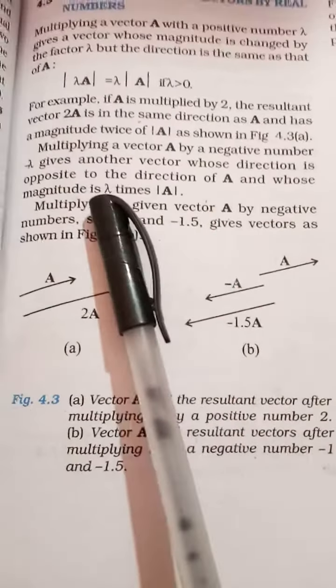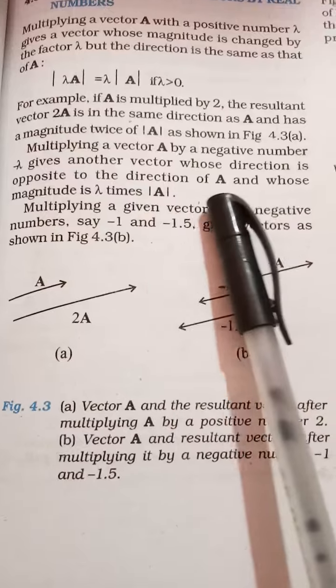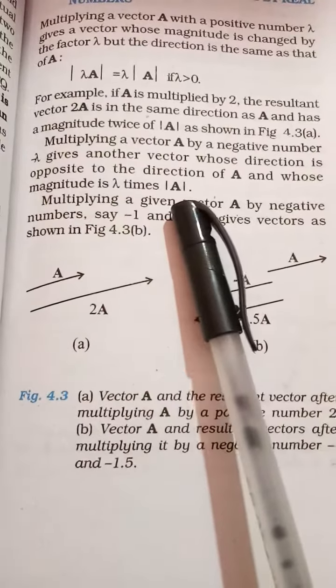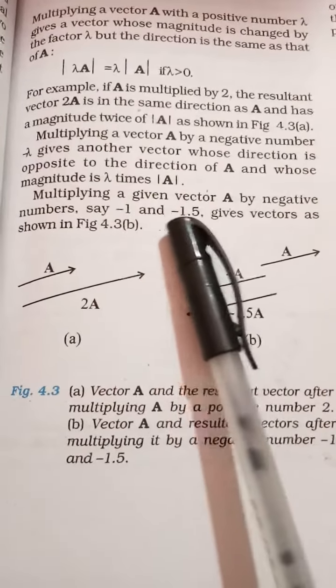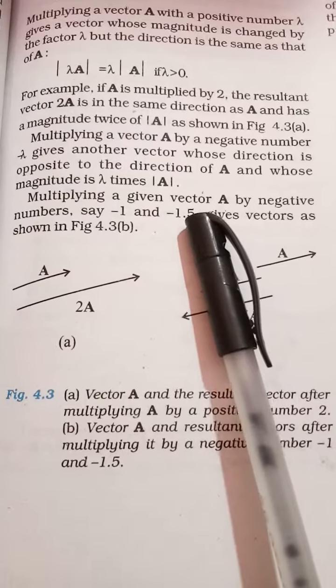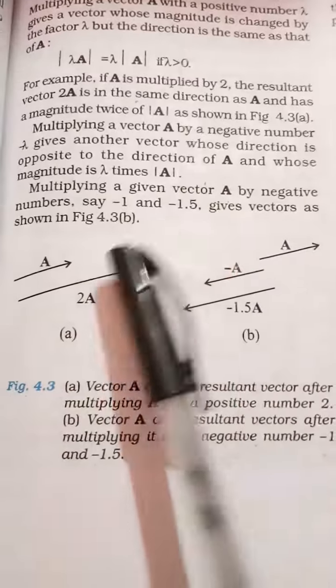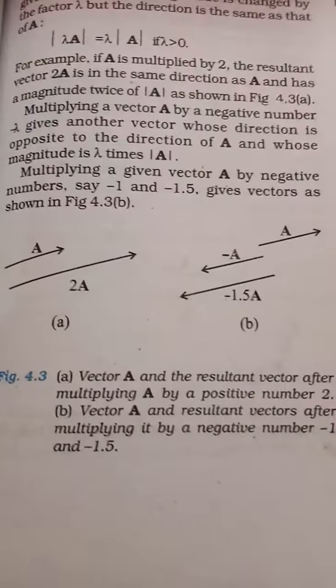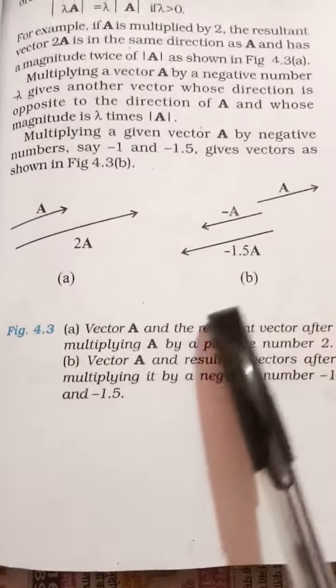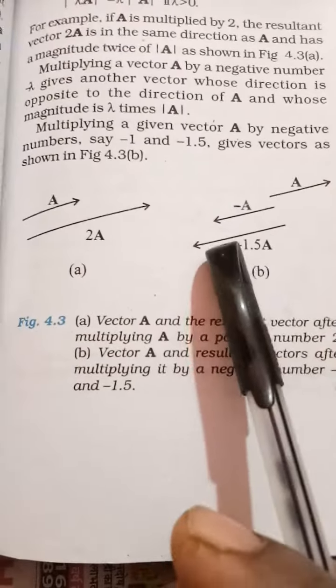...gives another vector whose direction is opposite to the direction of A and whose magnitude is lambda times |A|. Multiplying a given vector A by negative numbers, say minus 1 and minus 1.5, gives vectors as shown in figure 4.3(b).